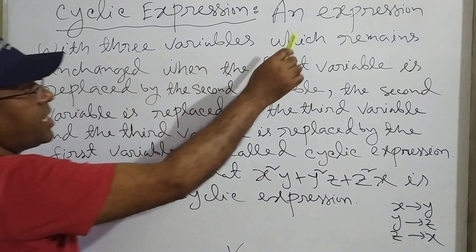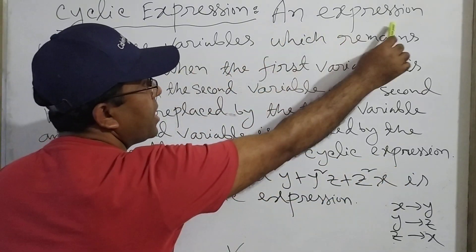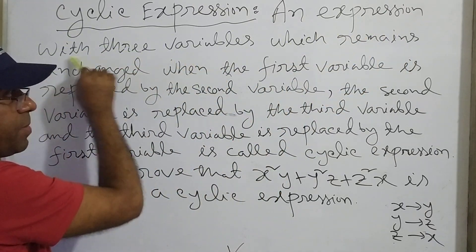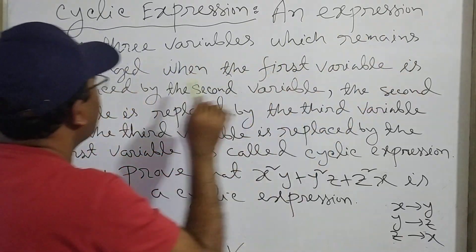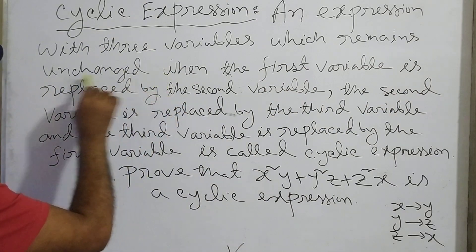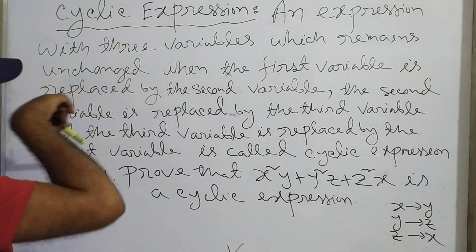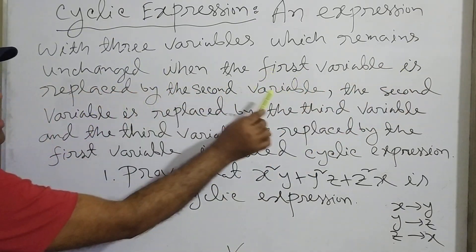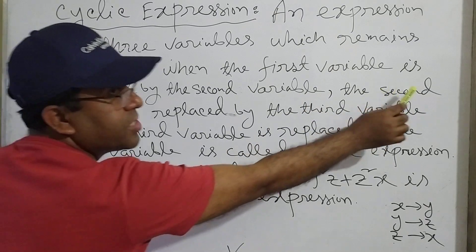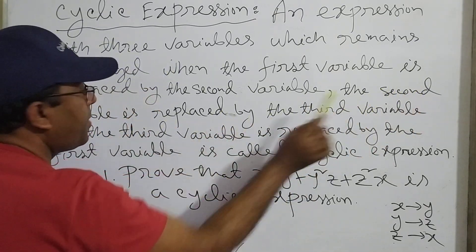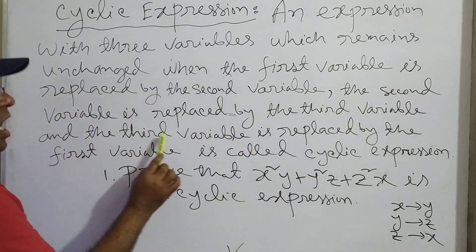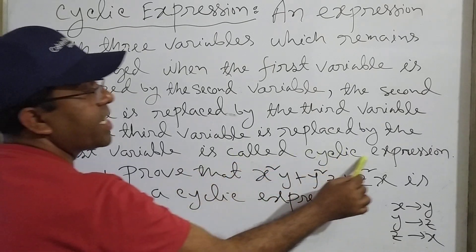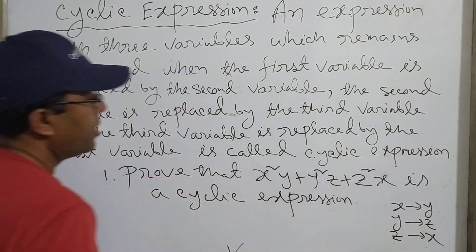Look at here. The expression with three variables remains the same when the first variable is replaced by the second variable, the second variable is replaced by the third variable, and the third variable is replaced by the first variable. This is called a cyclic expression.